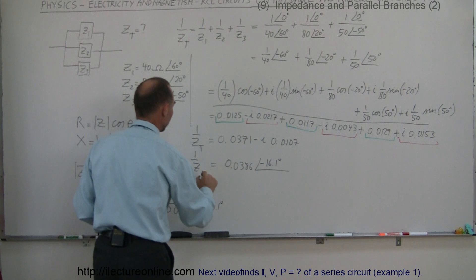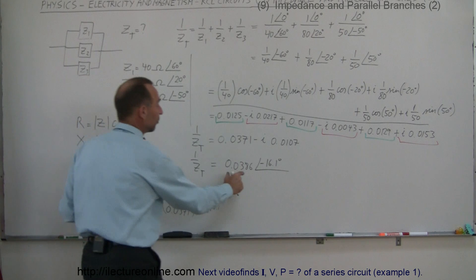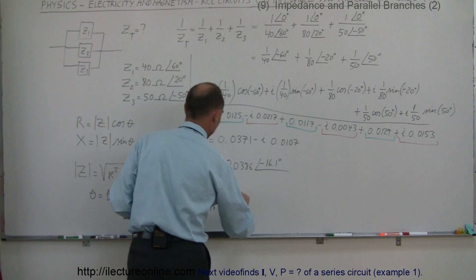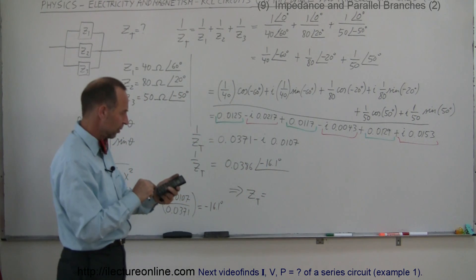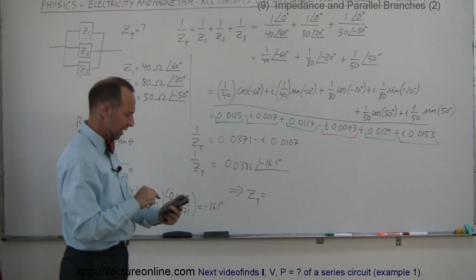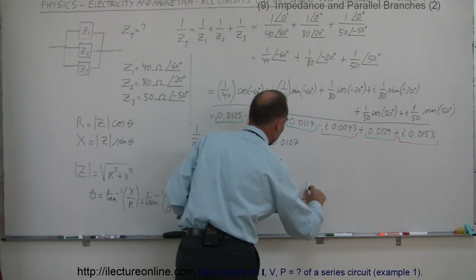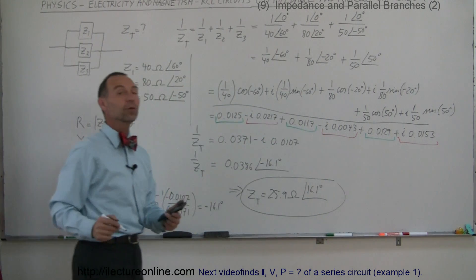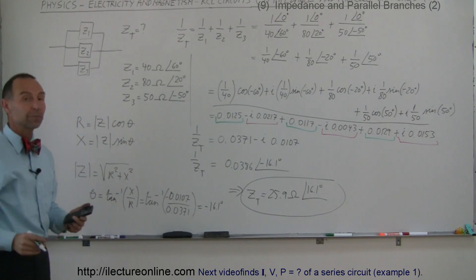But remember this is one over Z total, so to find Z total we take the inverse. That means we take one over 0.0386, which gives 25.9 ohms, and the phase angle becomes positive 16.1 degrees. So Z total equals 25.9 ohms at an angle of positive 16.1 degrees — and that's how you find the total equivalent impedance for a parallel branch circuit.